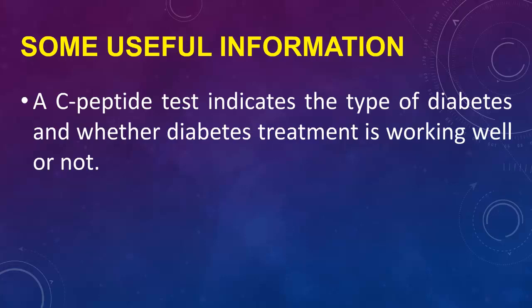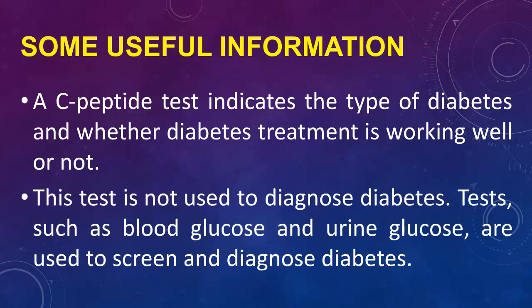Some useful information: A C-peptide test indicates the type of diabetes and whether diabetes treatment is working well or not. This test is not used to diagnose diabetes. Tests such as blood glucose and urine glucose are used to screen and diagnose diabetes.